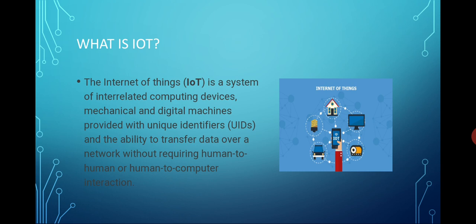In short, when any physical device which is connected through the internet can perform some tasks without direct user interaction and has its own unique identity, it is an IoT device. We can operate these IoT devices and gadgets via smartphones, tablets and laptops.